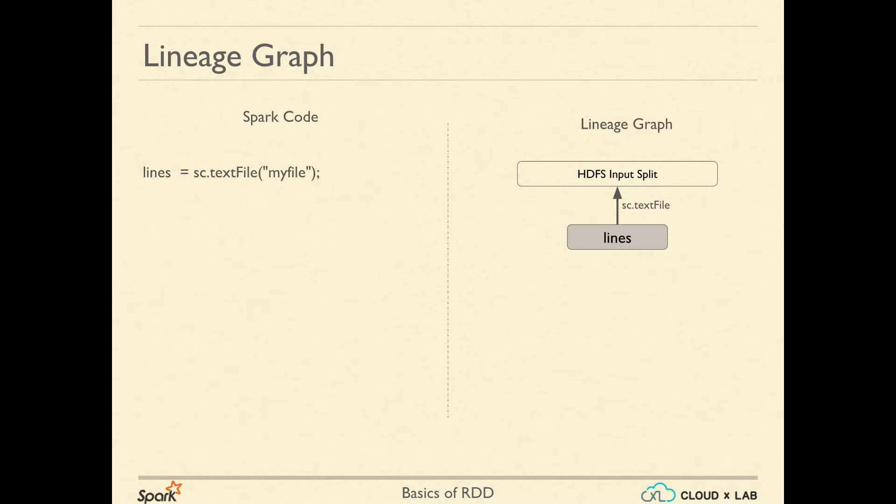In this example, we first create an RDD out of a text file which may be located on HDFS. The right side of the screen represents Spark making nodes of RDD details in the form of a graph.